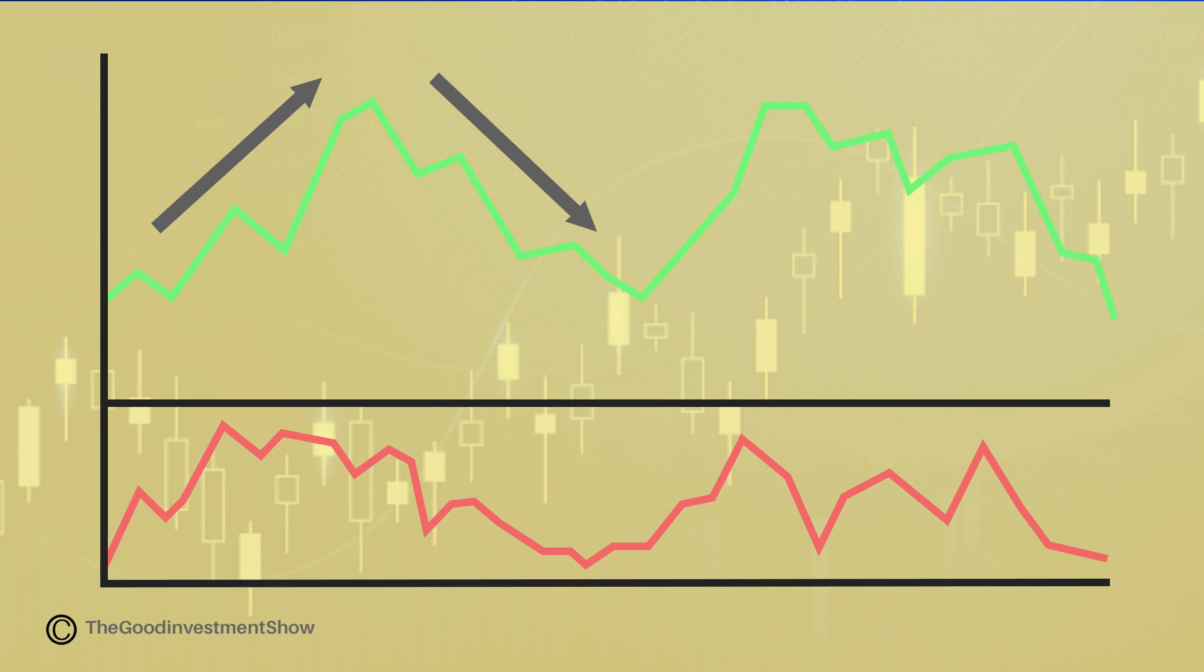For example, a bullish divergence occurs when a stock makes lower lows but RSI makes higher lows. This can be a signal that downward momentum is waning and a bullish reversal may follow.